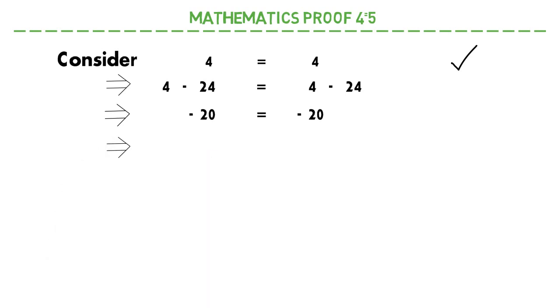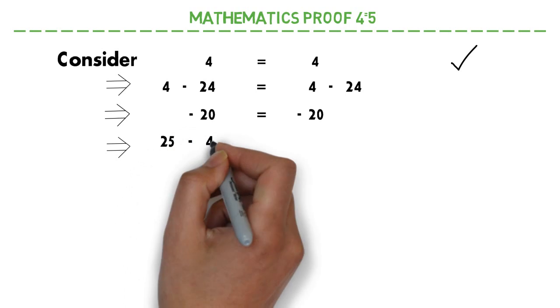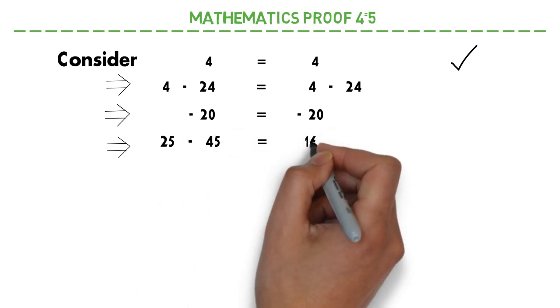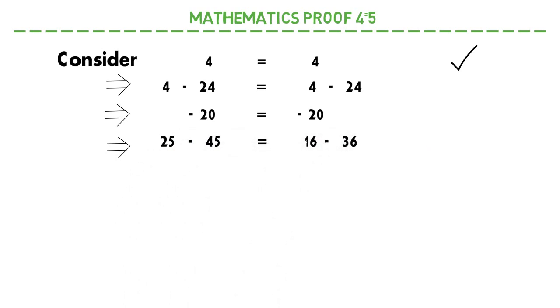Now minus 20 can be written as 25 minus 45, and minus 20 can also be written as 16 minus 36. No problem.